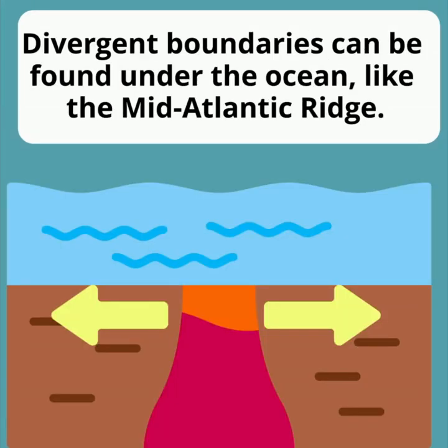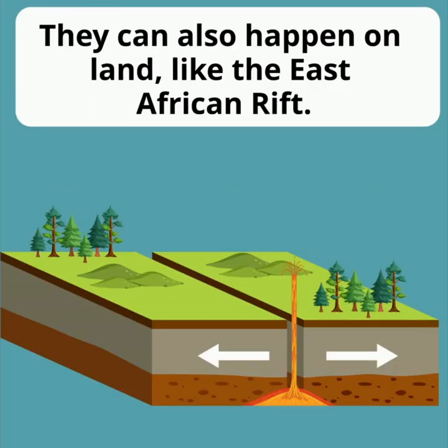Divergent boundaries can be found under the ocean, like the Mid-Atlantic Ridge, where magma rises and forms new seafloor. They can also happen on land, like the East African Rift, where the continent is stretching and cracking apart. Both places help scientists understand how our planet is constantly reshaping itself.